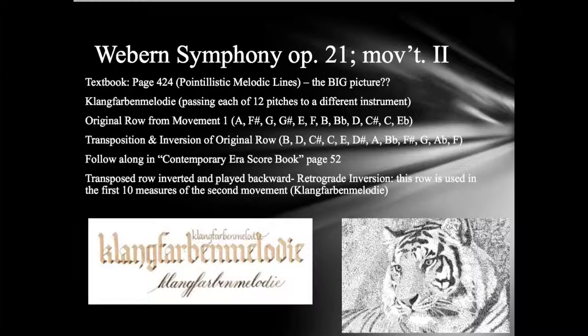So the transposed inverted row is now: B, D, C-sharp, C, E, D-sharp, A, B-flat, F-sharp, G, A-flat, F.